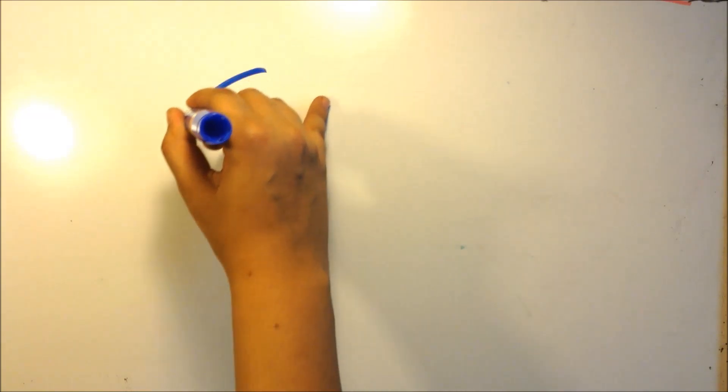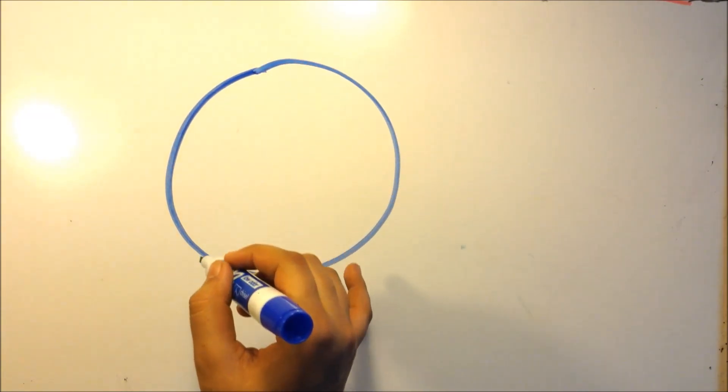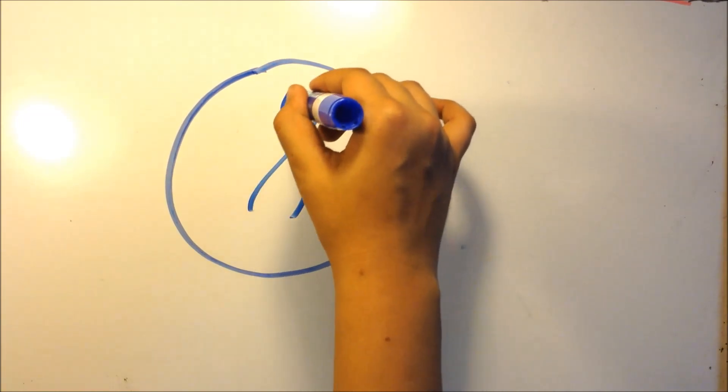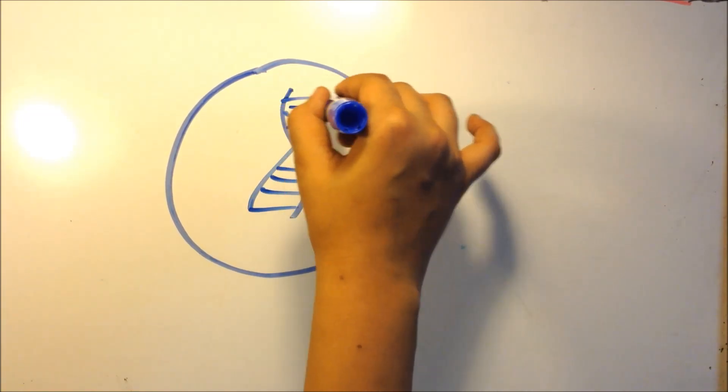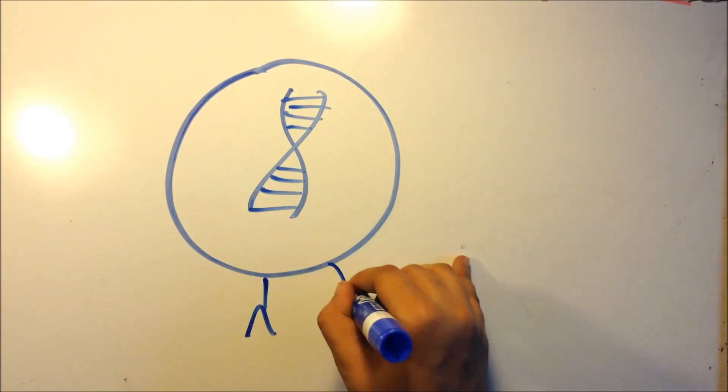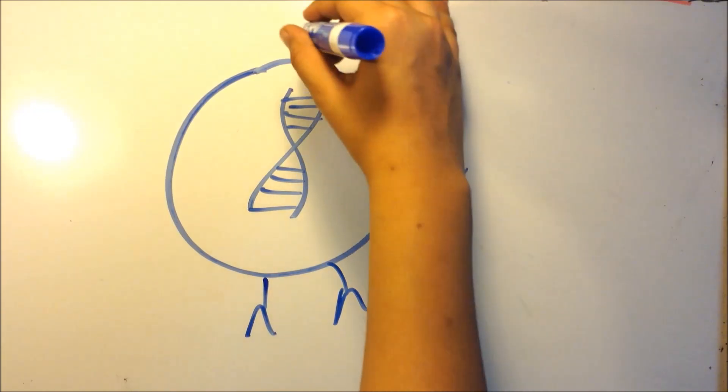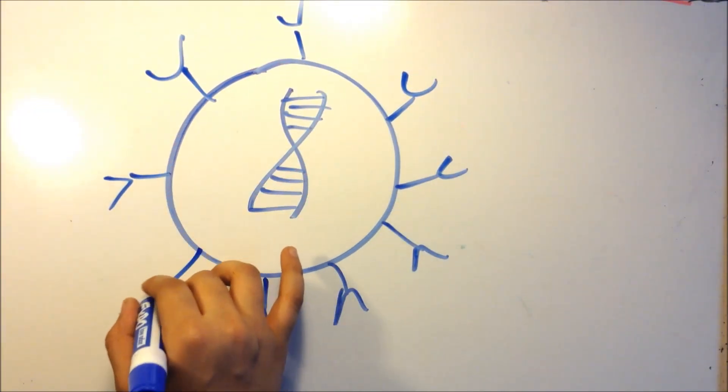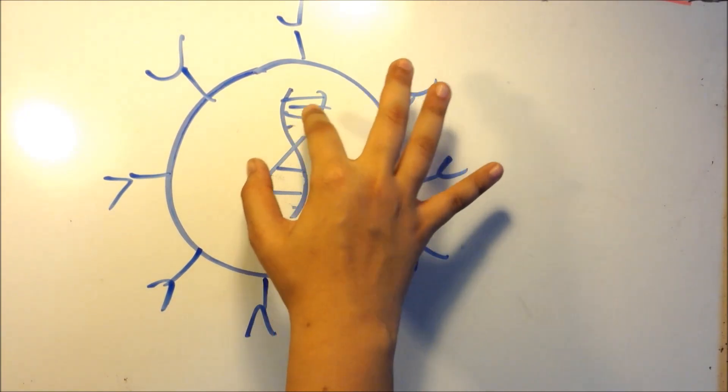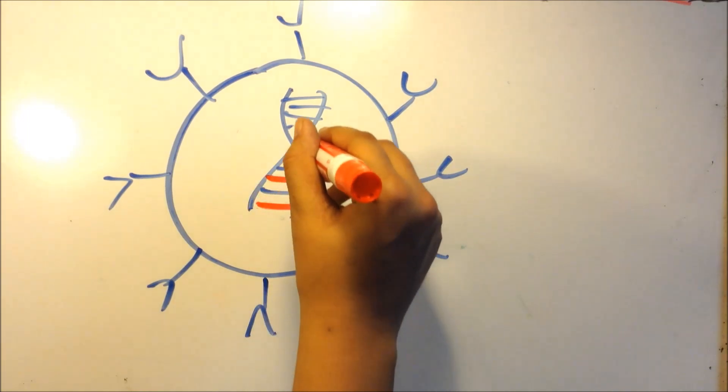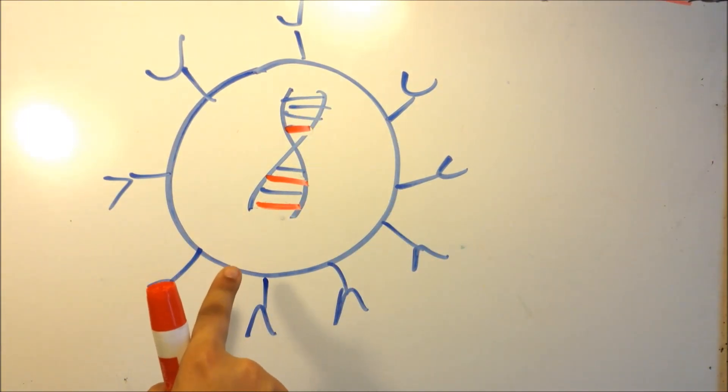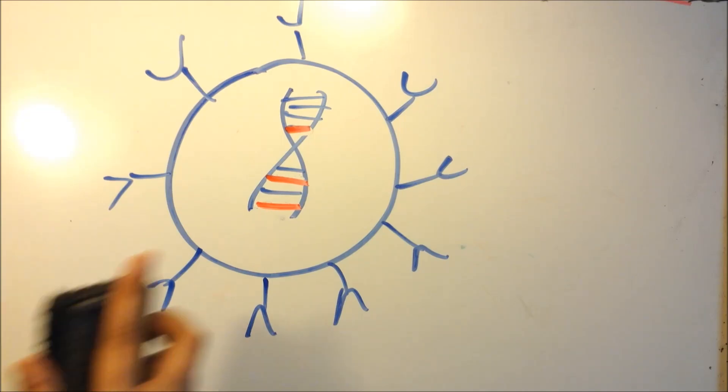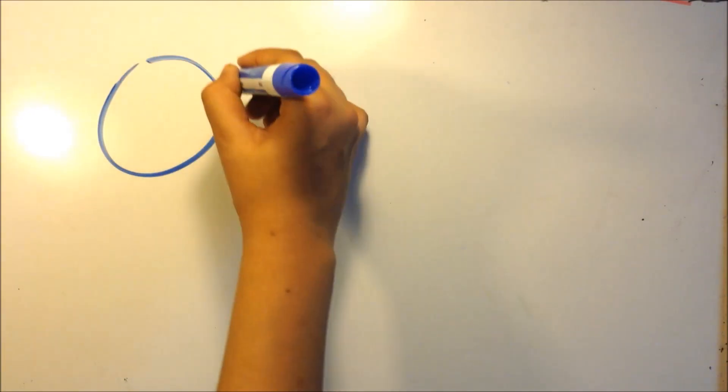Let's go further on how oncolytic virotherapy works. I'm going to draw a virus right now - this is the RigVir virus. RigVir virus has proven to be pretty beneficial in oncolytic virotherapy, and it selectively targets cancer cells. What happens is that scientists re-engineered the DNA in the virus to only attack cancer cells. This cell is just going to act like a normal virus, but only towards the cancer cells.